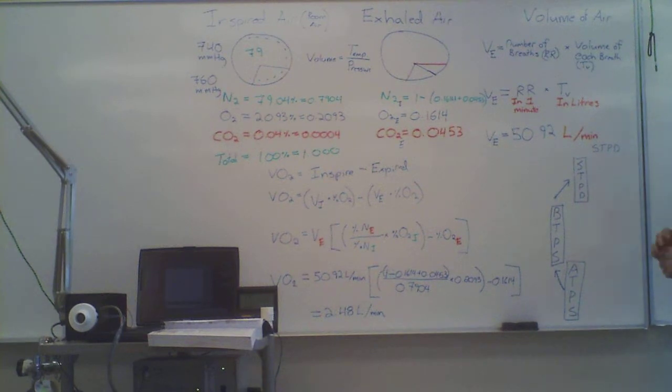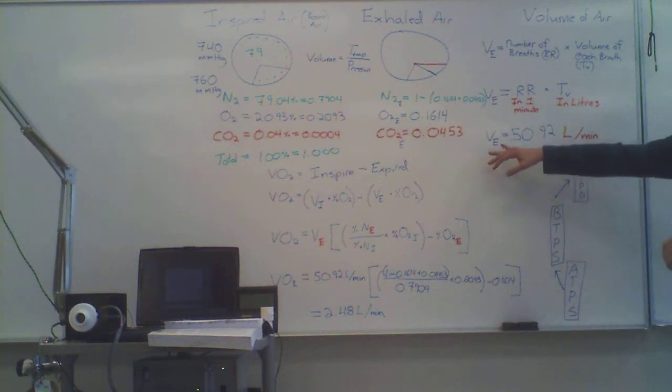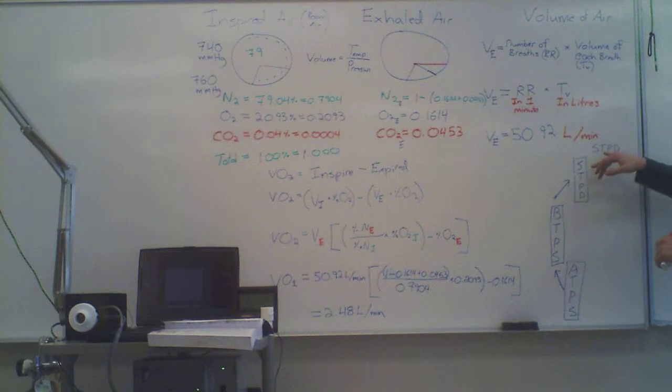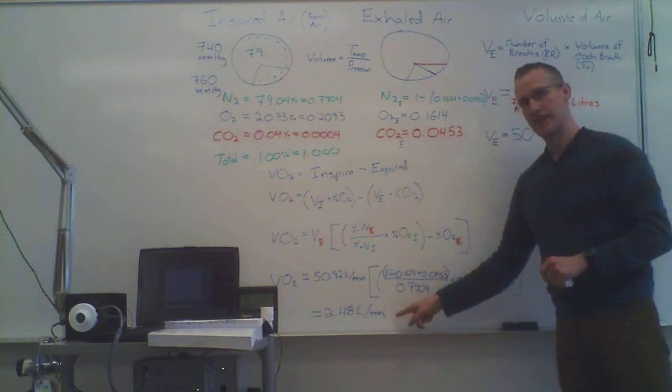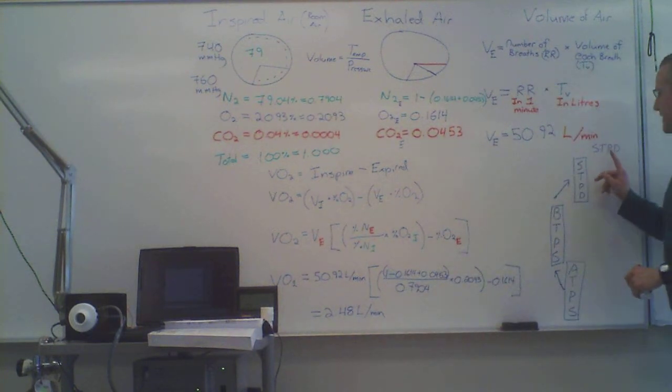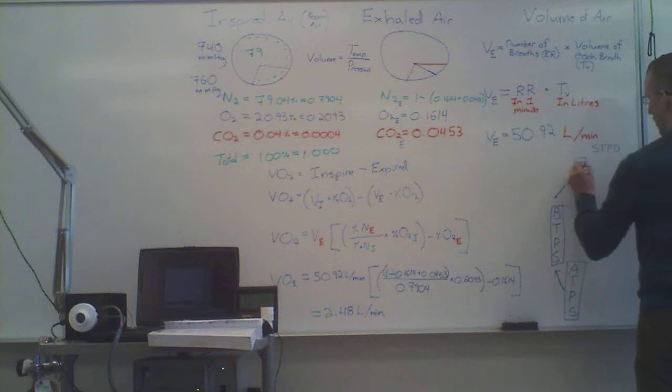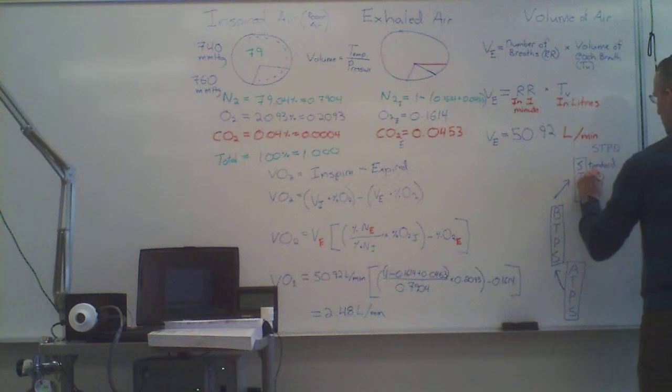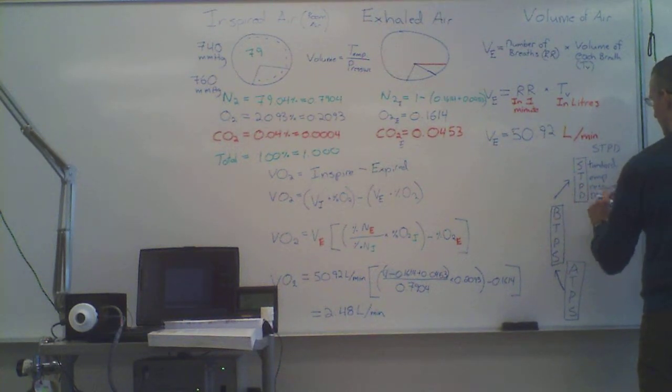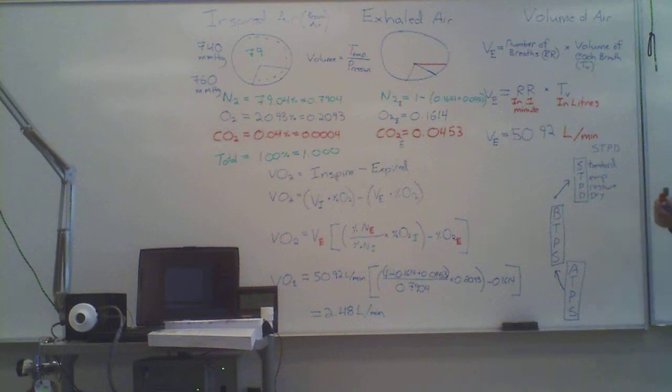The final factor that can affect these numbers, which is not something I expect you to calculate, but you must understand, is that ventilation has to be expressed in what we call STPD. So our oxygen consumption is also then STPD. STPD stands for Standard Temperature and Pressure Dry. Because all of those things can affect the volume of the air.